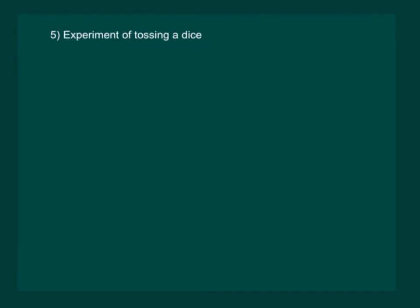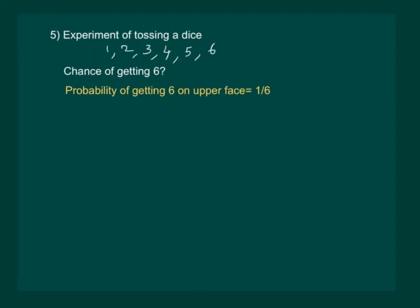Let us now consider the experiment of tossing a dice. When we toss a dice, the various possibilities or chances are that we may get 1, 2, 3, 4, 5, or 6. That means for a dice there are 6 equally likely possible outcomes. Now, if I want to find out the chance of getting a 6, it will be 1 sixth. The probability of getting 6 on the upper face when we toss a dice is 1 by 6.